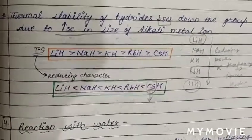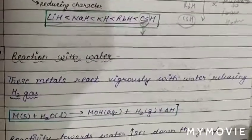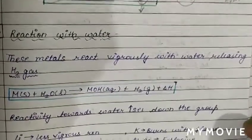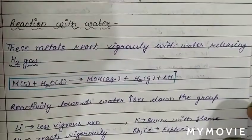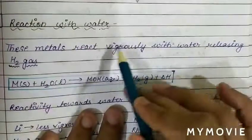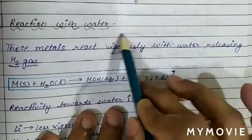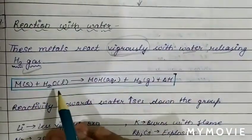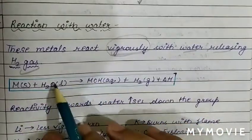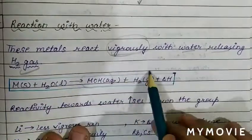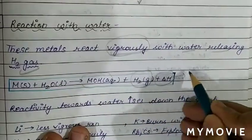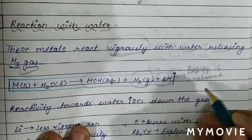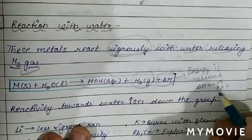The next chemical property is the reaction of alkali metals with water. These metals react vigorously with water, releasing hydrogen gas. When alkali metals react with water, they form a base with the evolution of hydrogen gas, and energy is released — meaning it is an exothermic process (ΔH is negative).